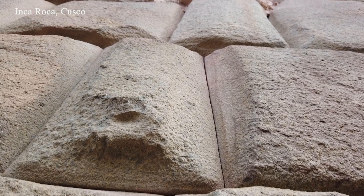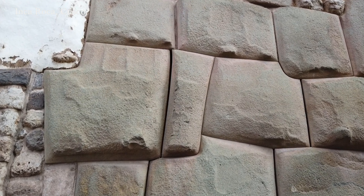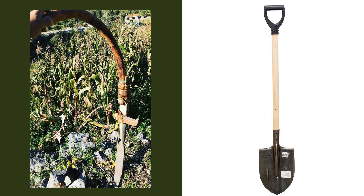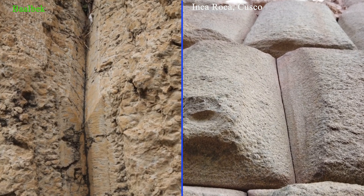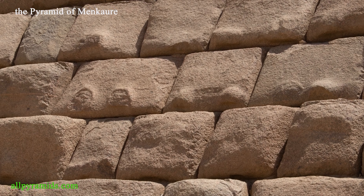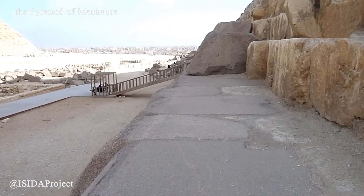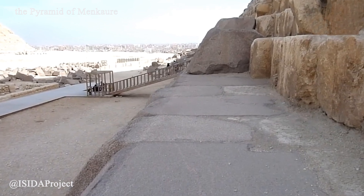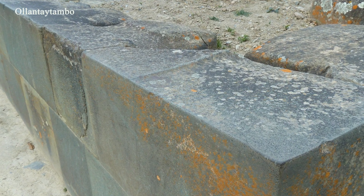Situations where identical tasks are solved using similar methods but different tools are quite typical. For example, in some regions manual farming is done with a shovel, while in others with a chacataclia — the same task of loosening soil carried out in different ways. We observe exactly the same pattern in stoneworking. The granite casing of the Pyramid of Menkaure demonstrates high joint quality and belongs to the same category as polygonal masonry. The key difference is the absence of deep seating beds — the joints between blocks are flat, unlike the curved surfaces found in Peru, which serve to prevent block displacement in seismically active regions. In Egypt, such seismic concerns were minimal, so the joints were made flat.